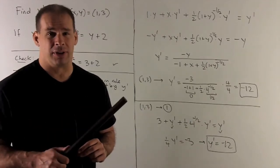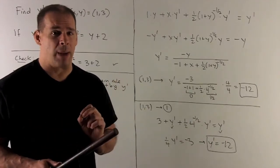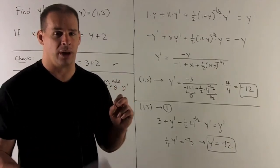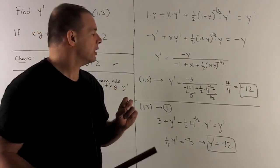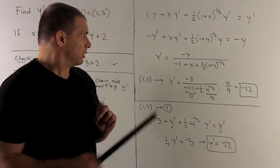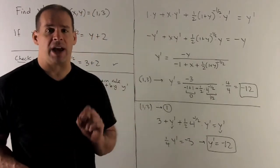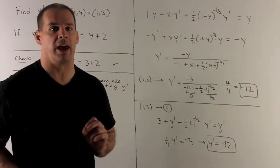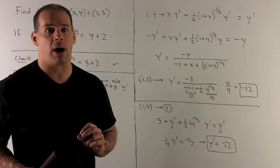I can factor out everything from the thing with the y prime on it. So I get y prime by itself. And then we divide by whatever's left over when we factored. So in the bottom of my quotient here, what's factored out is going to be minus one plus x plus a half, one plus y to the minus one half. That's my y prime.